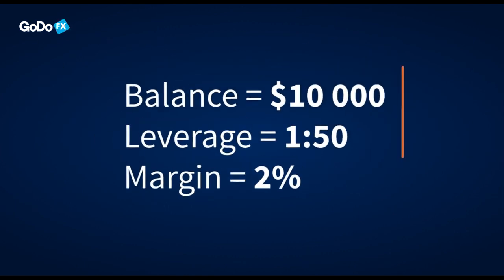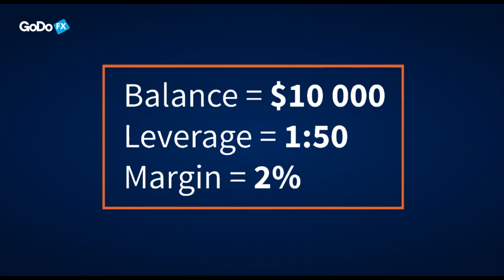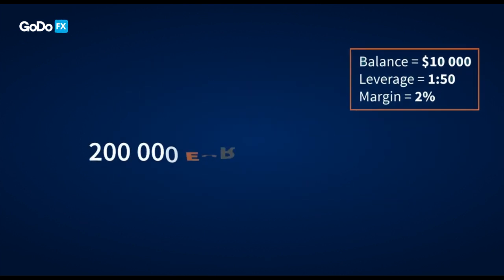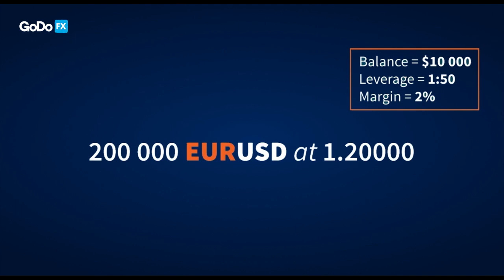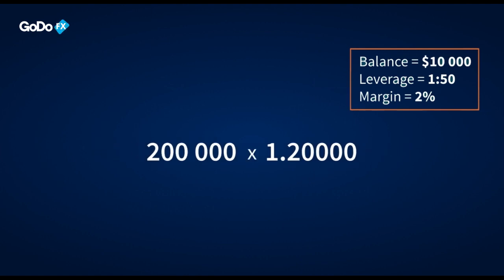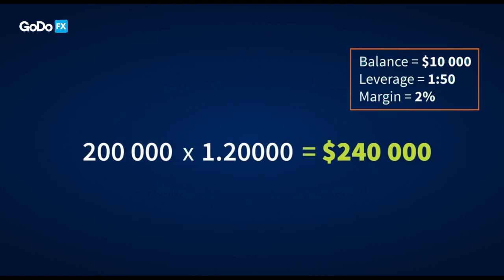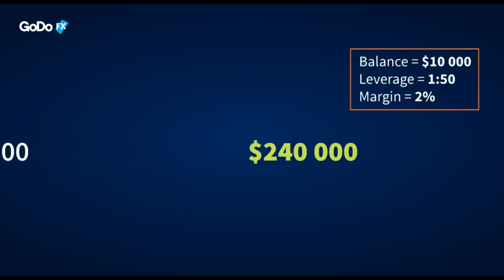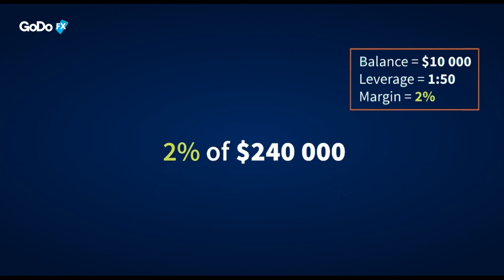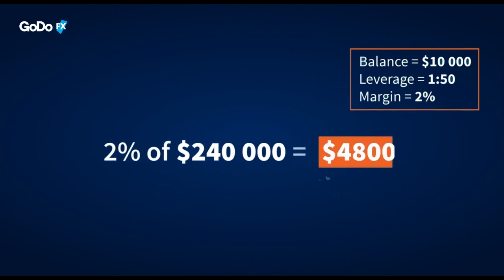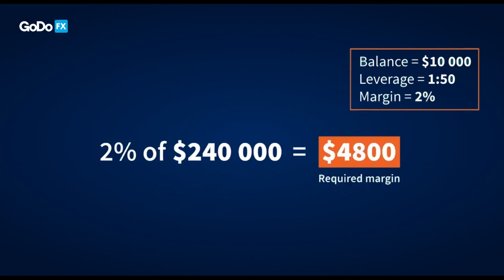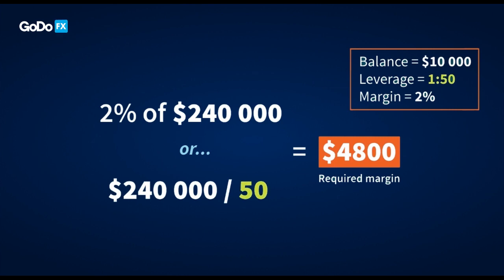Let's take a look at this example. Say that someone enters a trade with the following conditions — decides to buy two lots of EURUSD at the exchange rate of 1.20. So the transaction will amount to US$240,000. The required margin for this position is calculated as follows: US$240,000 divided by 50.